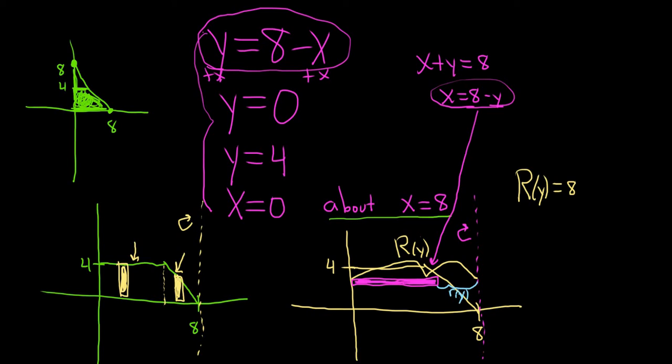Little r of y is the distance from the close end to the axis of revolution. So here's the trick. Whenever you're thinking of functions of y, in other words, whenever you have a horizontal rectangle, it's right minus left. If you have vertical rectangles, it's top minus bottom. So this distance here is 8. This distance here is x equals 8 minus y. And this is x equals 8.